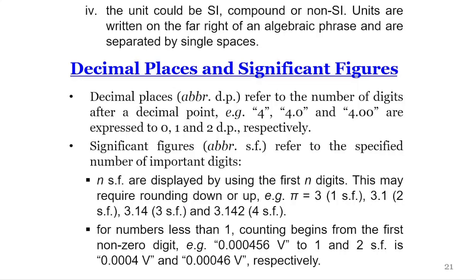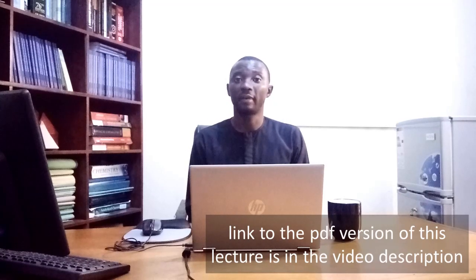For numbers less than one, counting begins on the first nonzero digit. For example, to two significant figures, we simply write 0.00042, that is nonzero and then to two significant figures we write 0.000042.